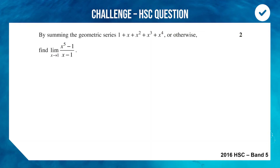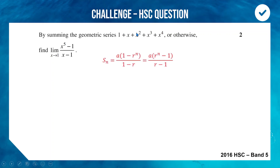To finish, a challenging band 5 question from the 2016 HSC that almost every advanced maths student finds very confusing. By summing the geometric series 1 + x + x² + x³ + x⁴, find the limit as x approaches 1 of (x⁵ − 1)/(x − 1). The issue is we cannot substitute x = 1 directly because we'd get zero in the denominator — and you can't divide by zero.